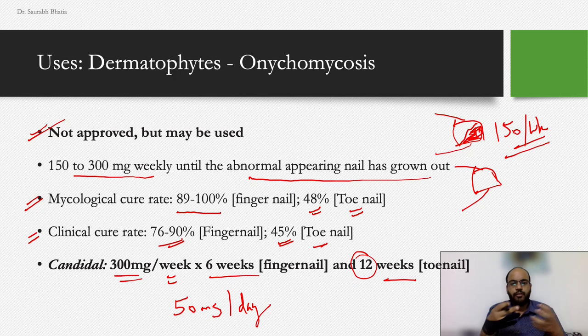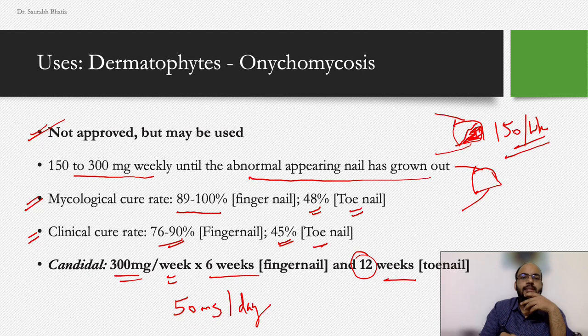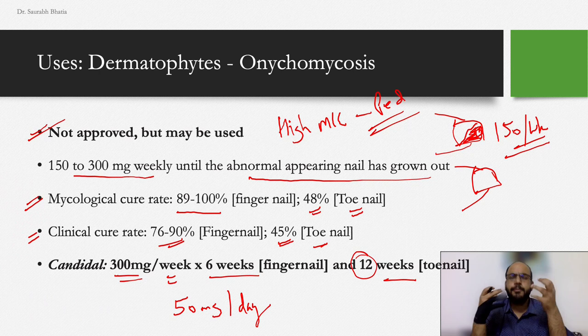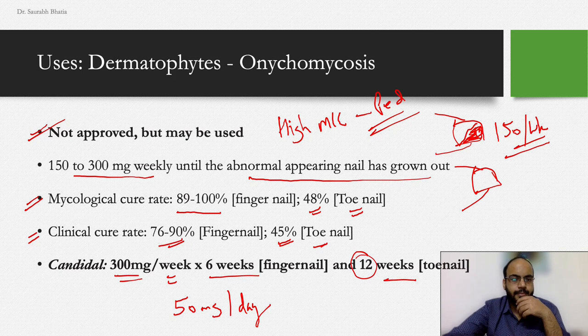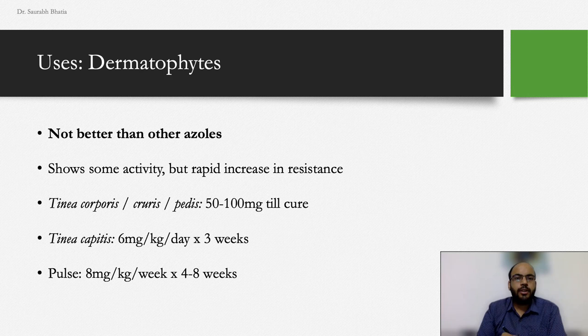Some studies have found that fluconazole still enjoys high MIC values — meaning it remains effective — in the pediatric population, making it a good choice to consider for fungal infections in children. Moving to dermatophytic skin infections: fluconazole has not been found better than other azoles; consider using itraconazole for dermatophytes.